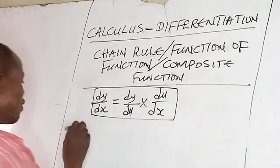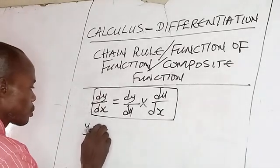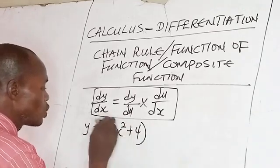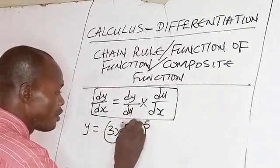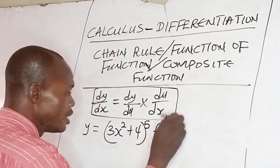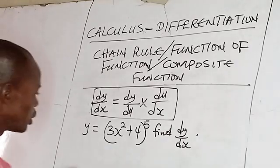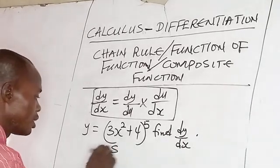In line with this, if y equals (3x² + 4)⁵, find dy/dx. Now to differentiate this, solution: